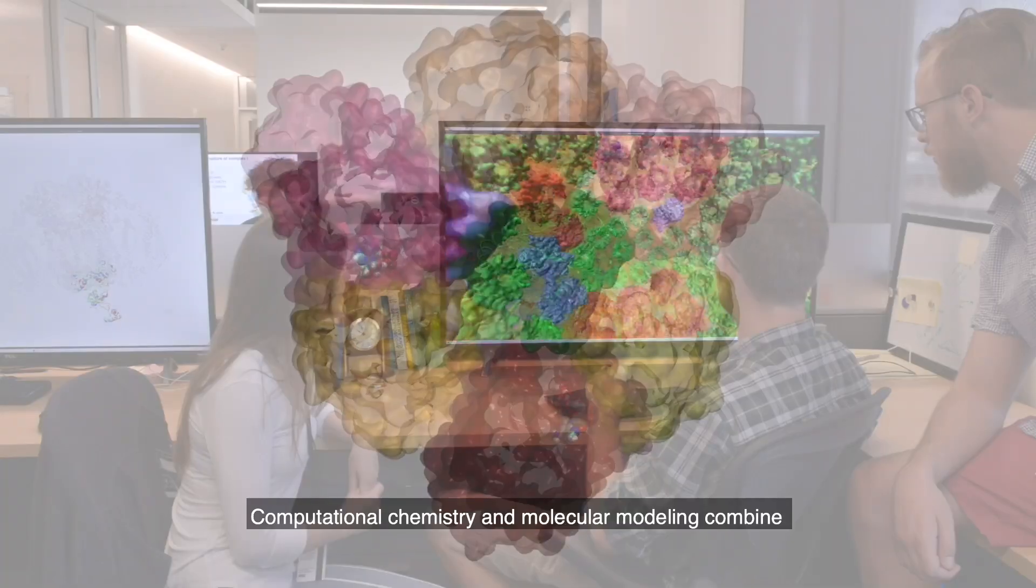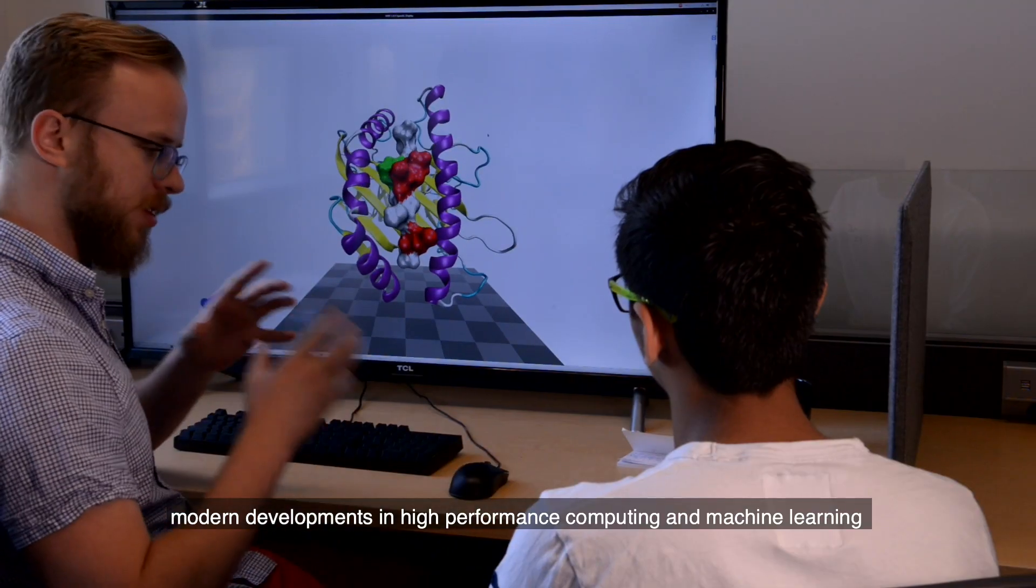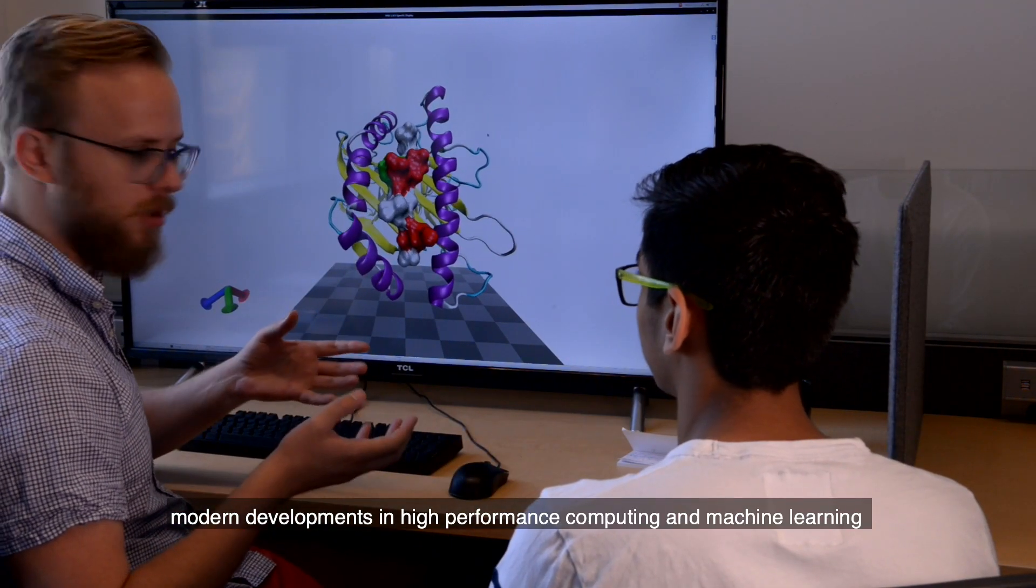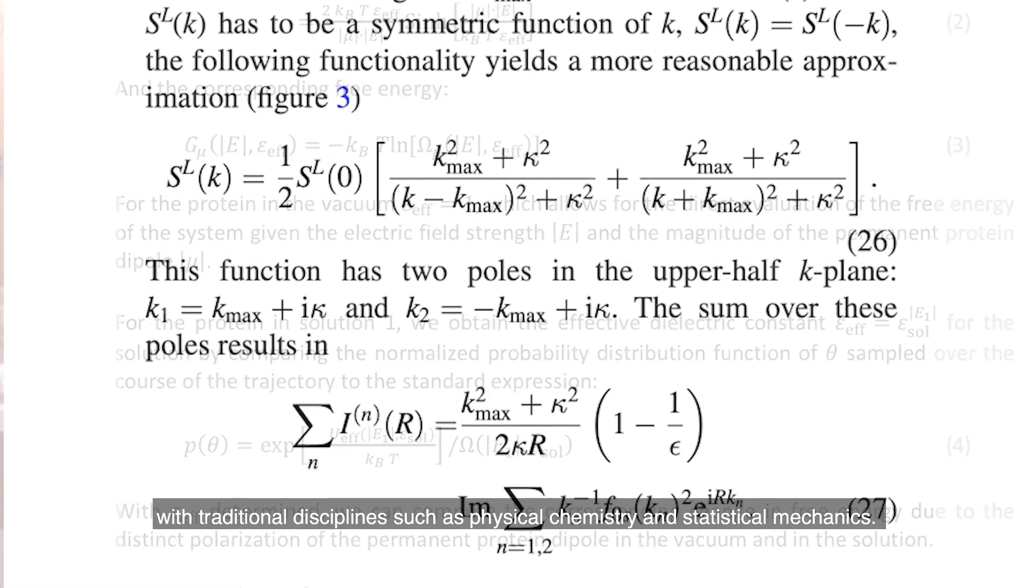Computational chemistry and molecular modeling combine modern developments in high-performance computing and machine learning with traditional disciplines such as physical chemistry and statistical mechanics.